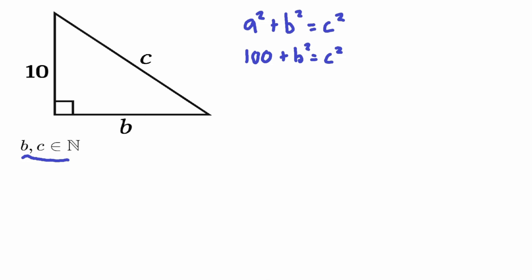So what do we do next? I want to get the 100 by itself and group the variables together, so I'm going to subtract b² from both sides. That leaves us with 100 = c² − b².